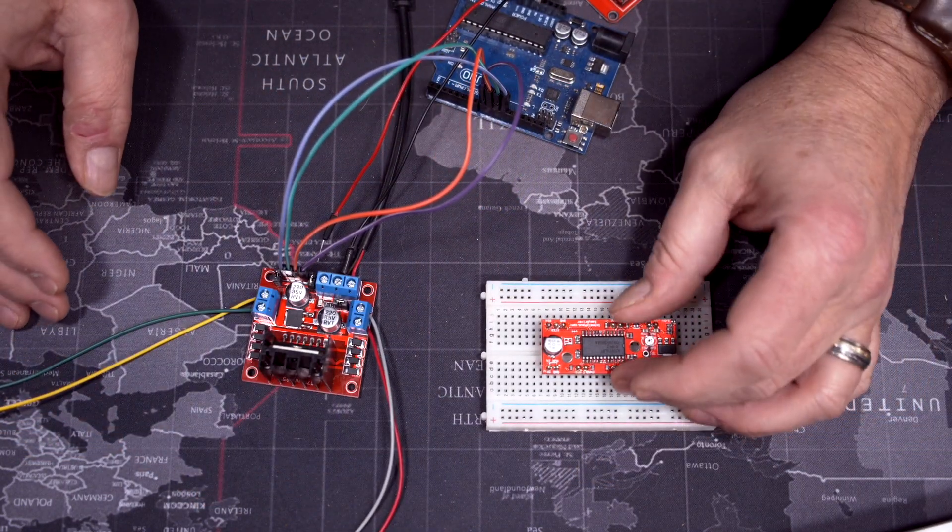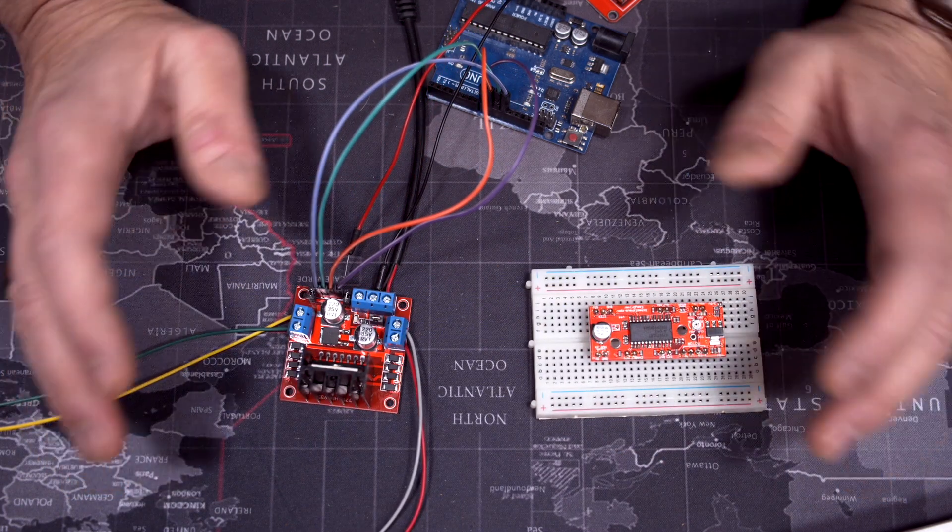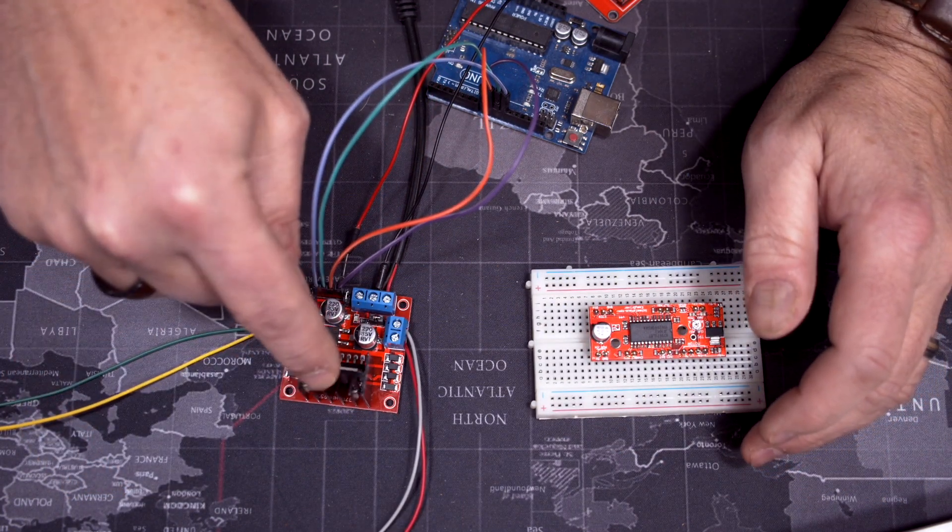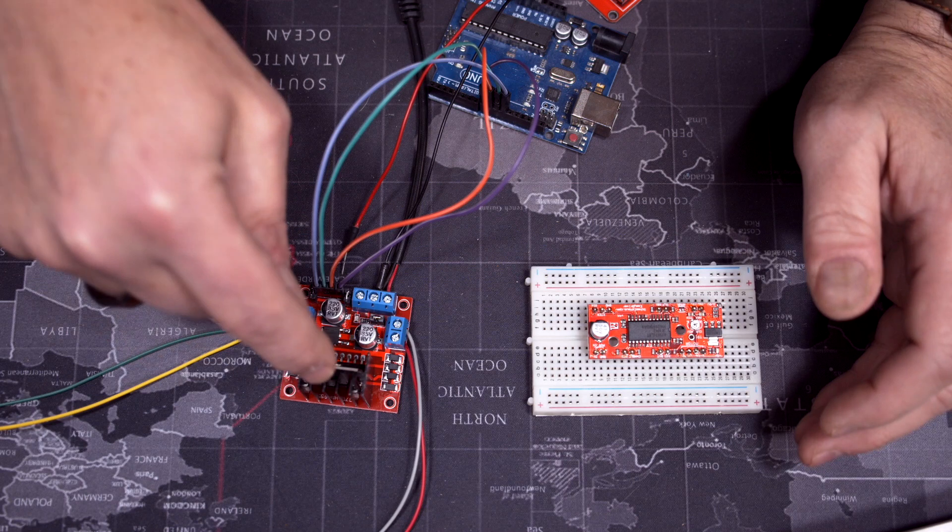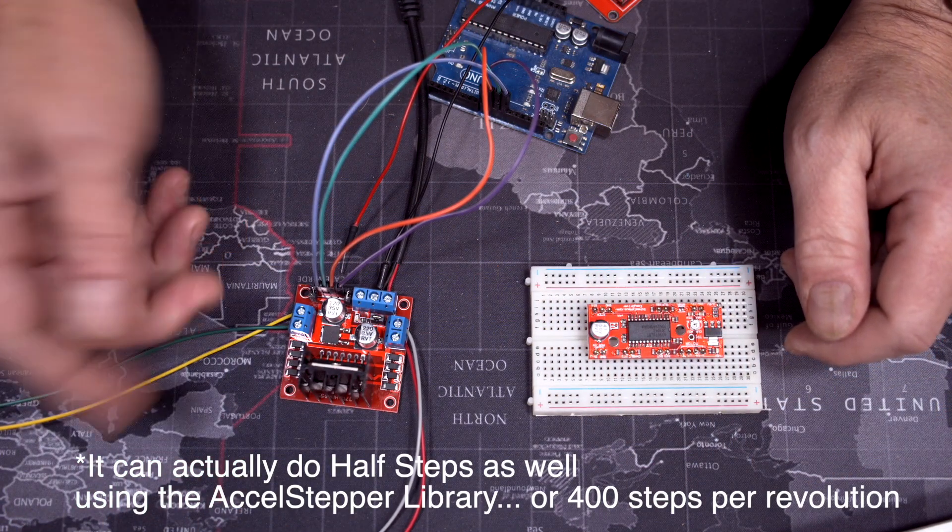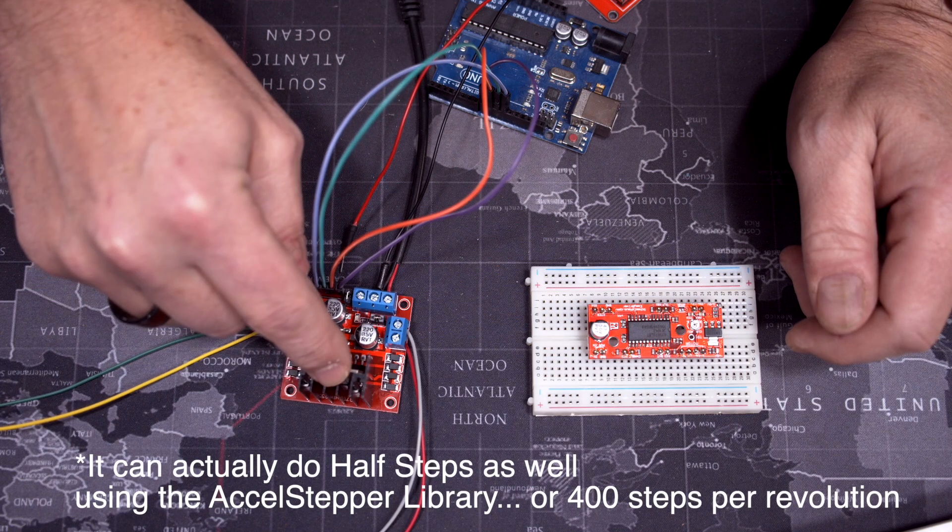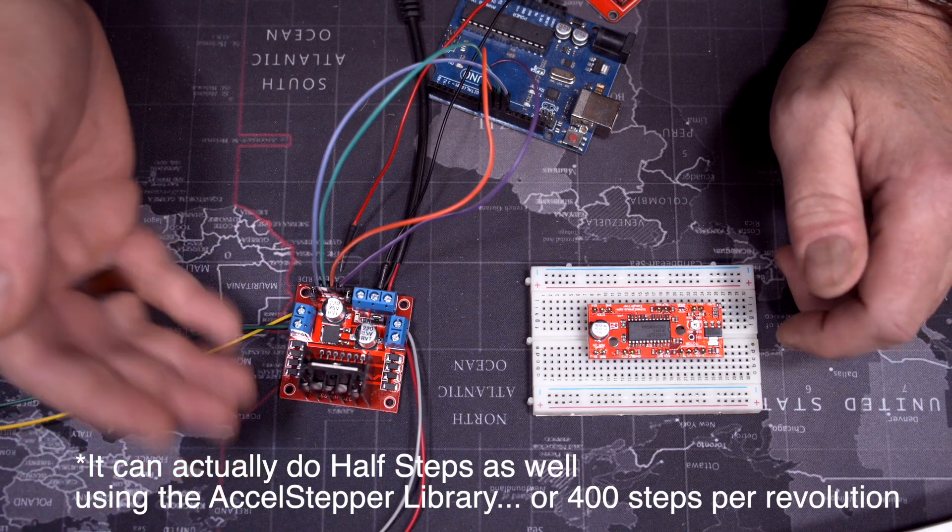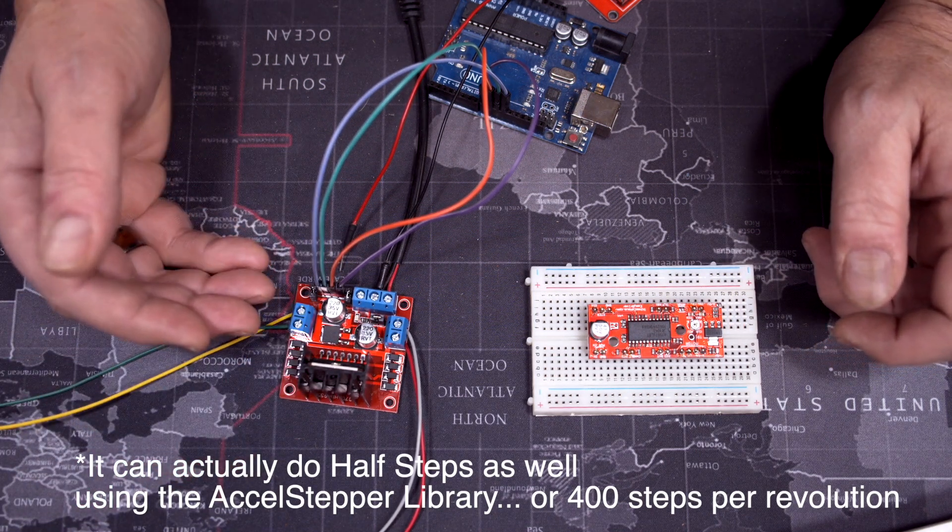Now of course, the EZ driver has more capabilities. If you talk about stepping, the L298 can only do, theoretically, full steps. You could always do something with the code, Arduino code, but it's not easy. So full steps only. So in most stepper motors, that equals to 200 steps per revolution.